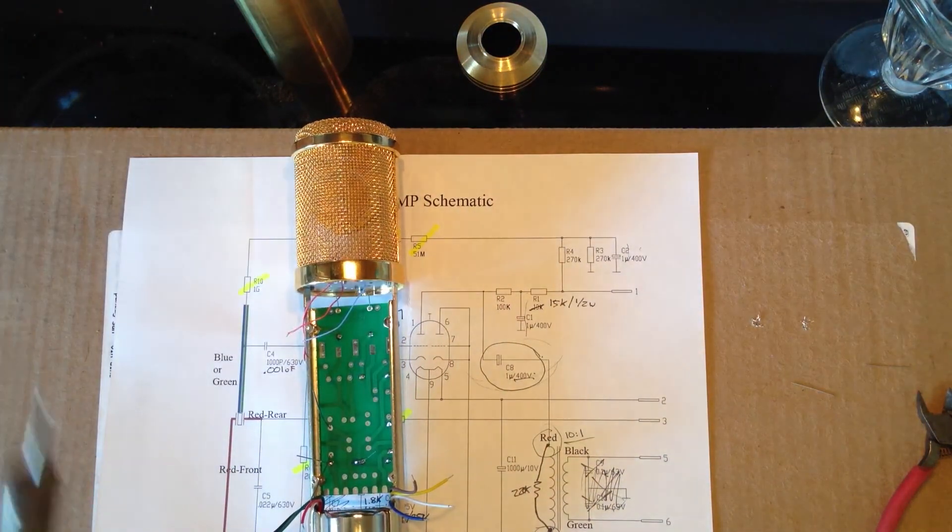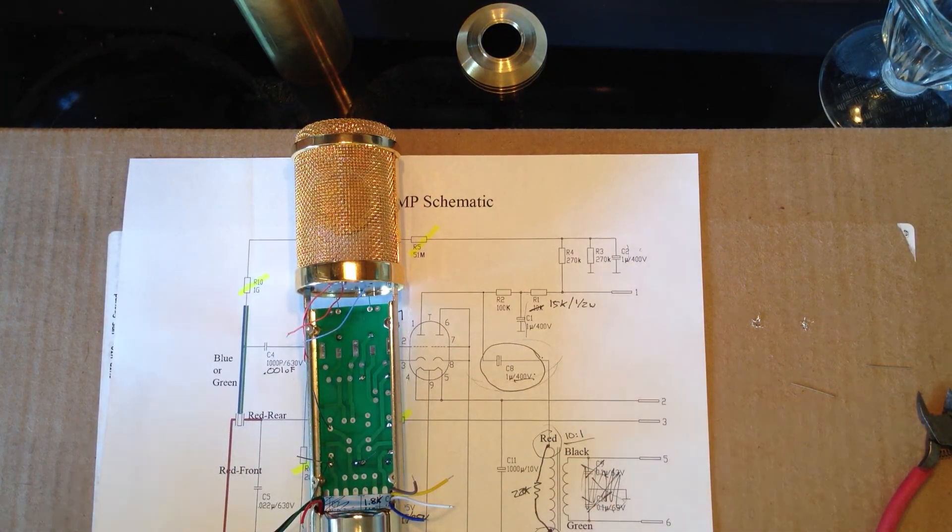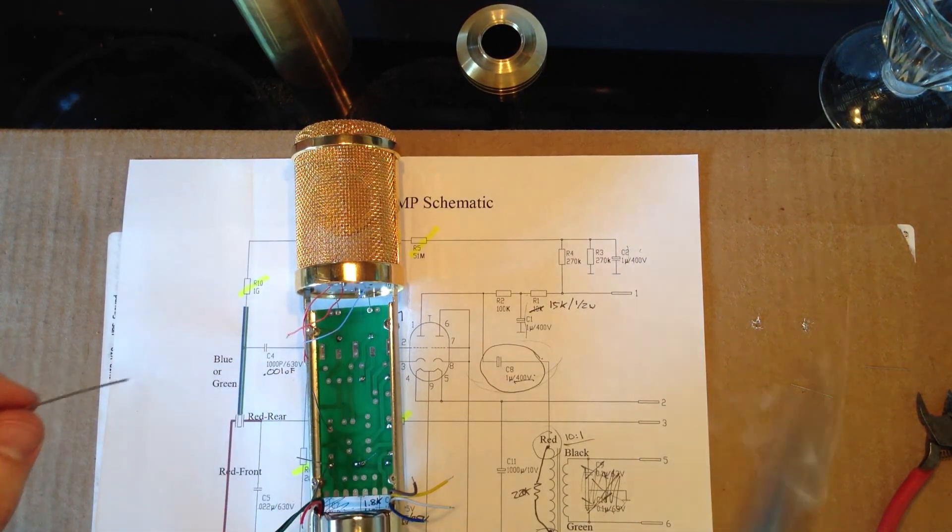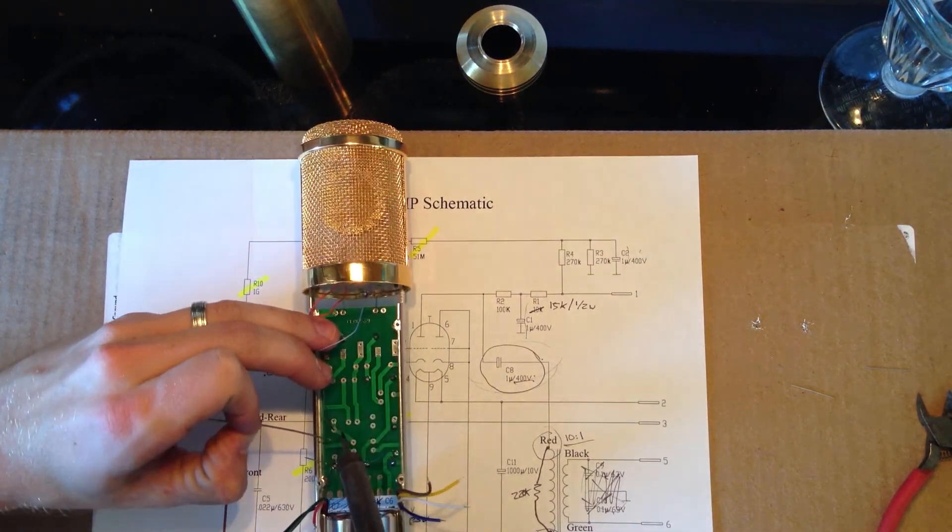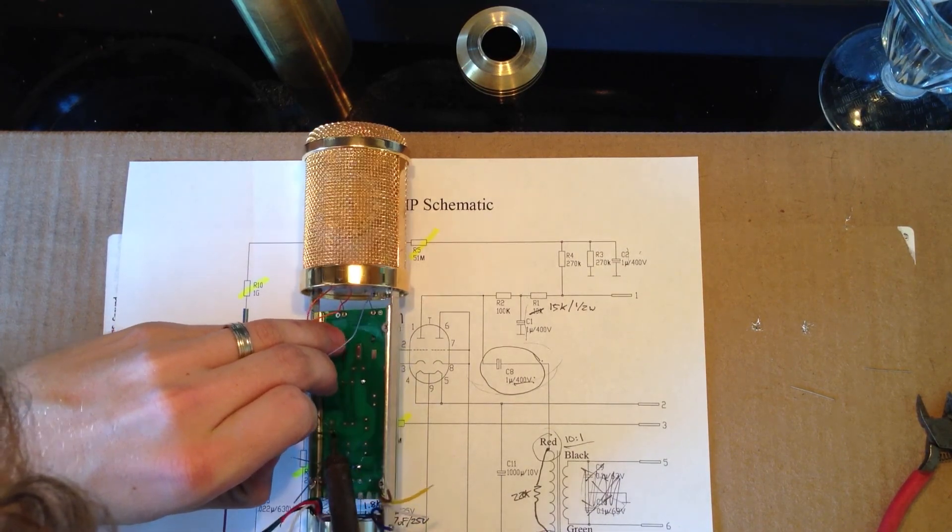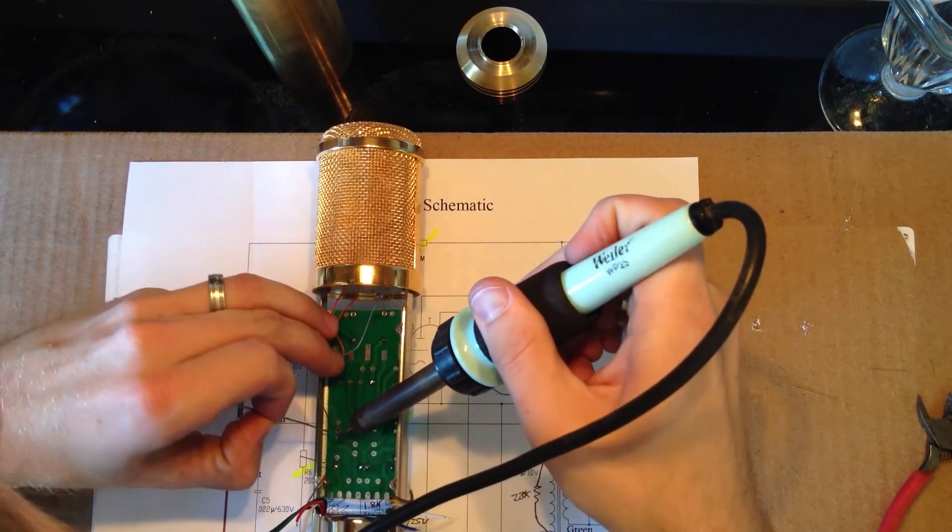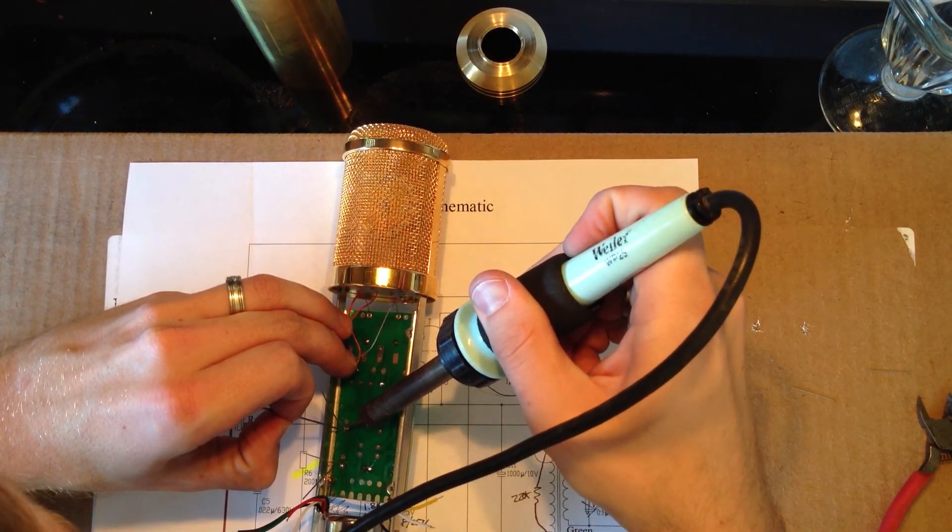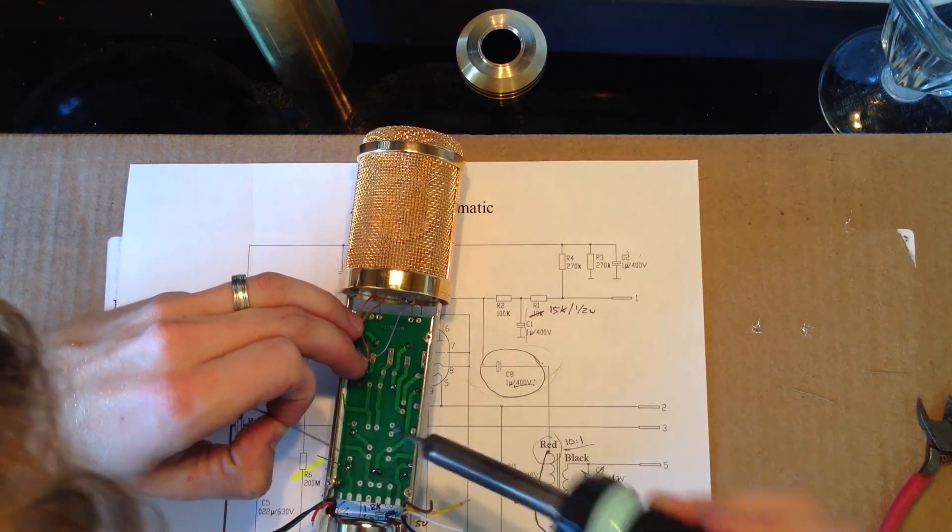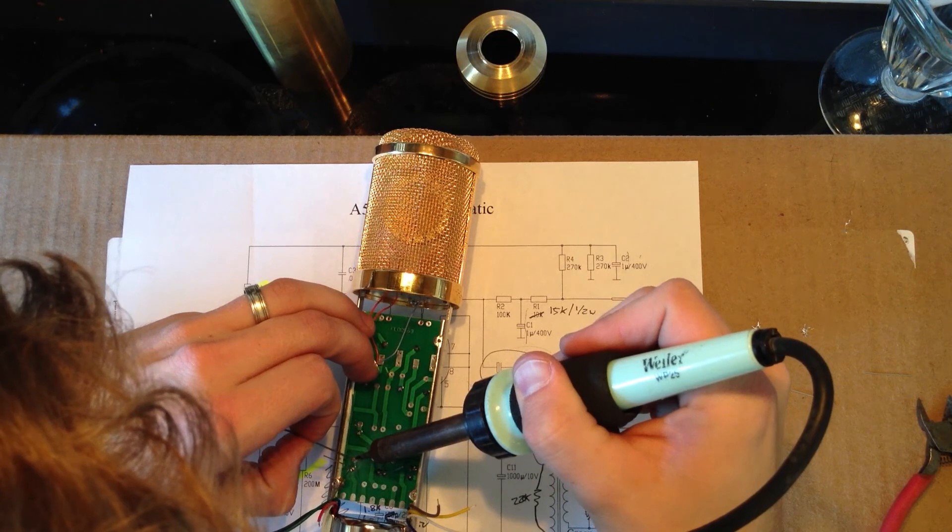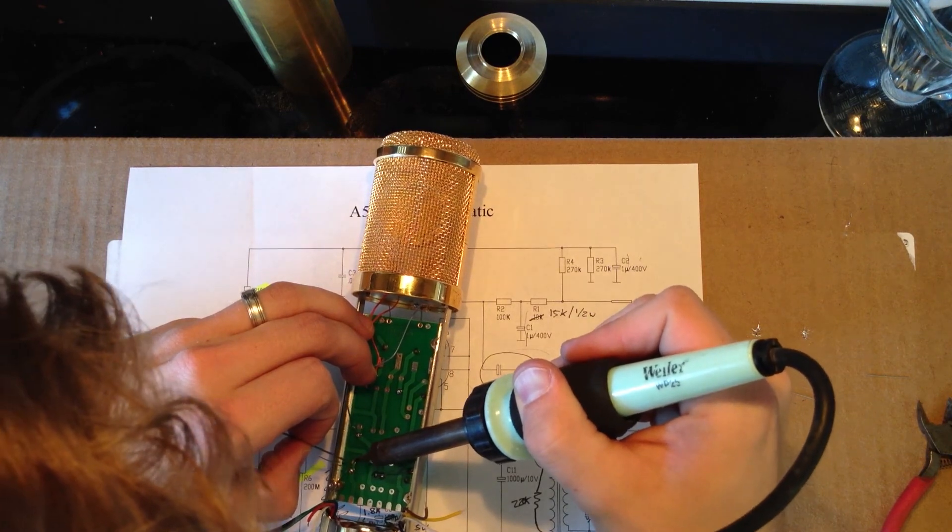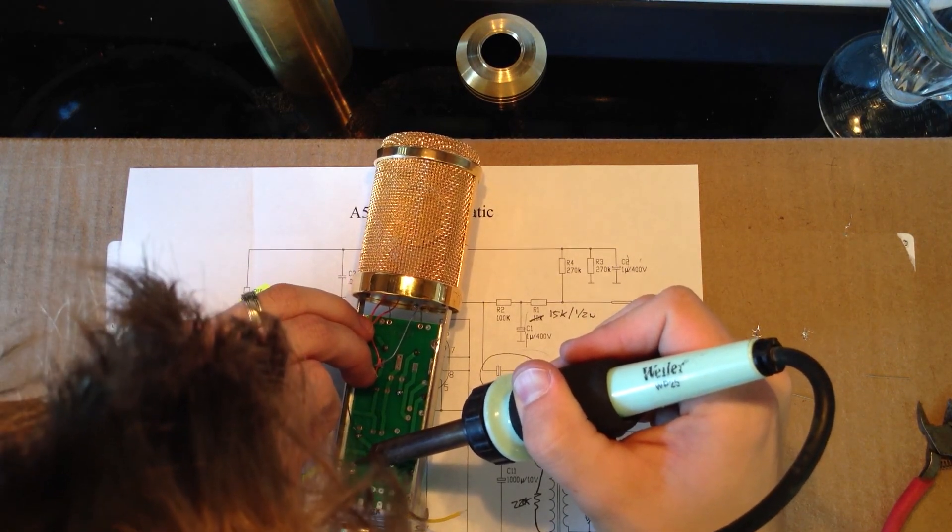Grab your soldering iron and solder. Tin the tip. And go ahead and get down in here and solder on the board. Now, I'm making things a little bit more difficult on myself by keeping this in the chassis. But I figured it would make for a good video. So, there you go.